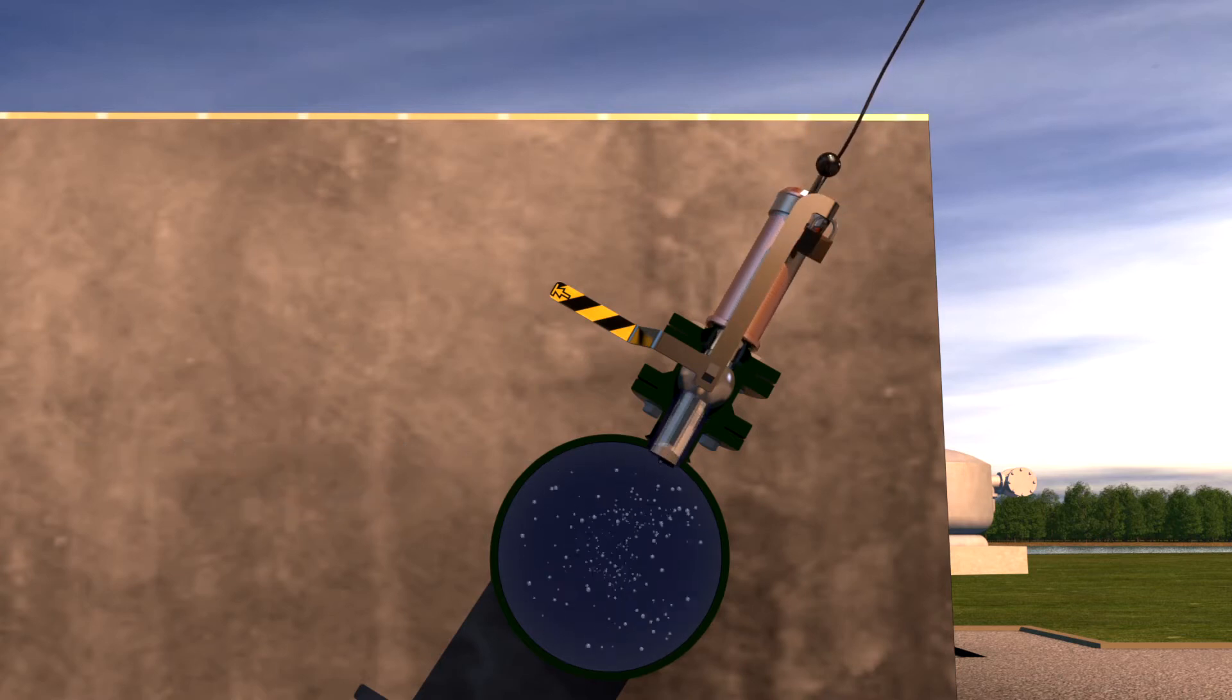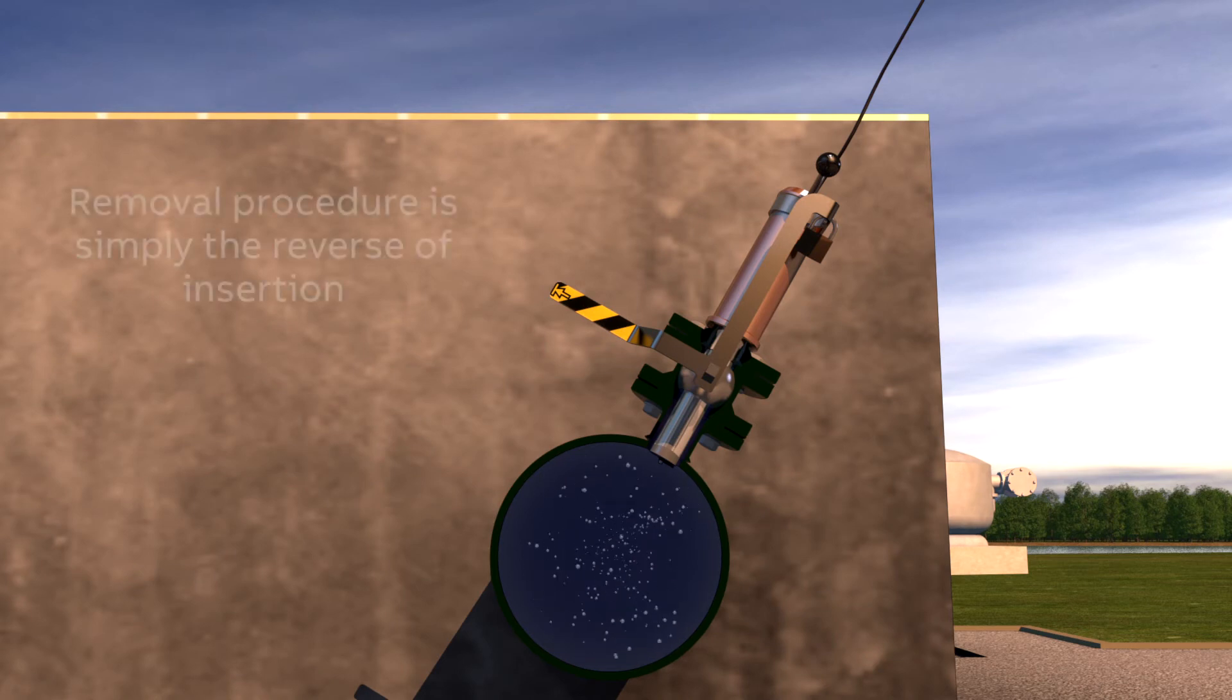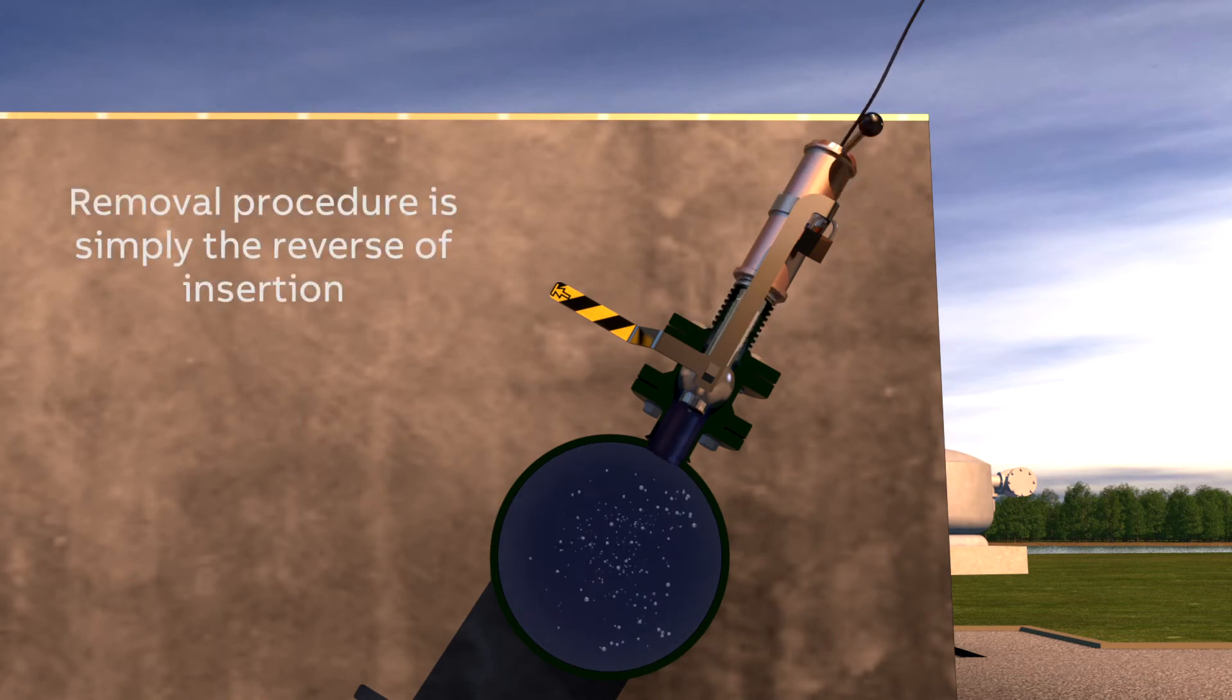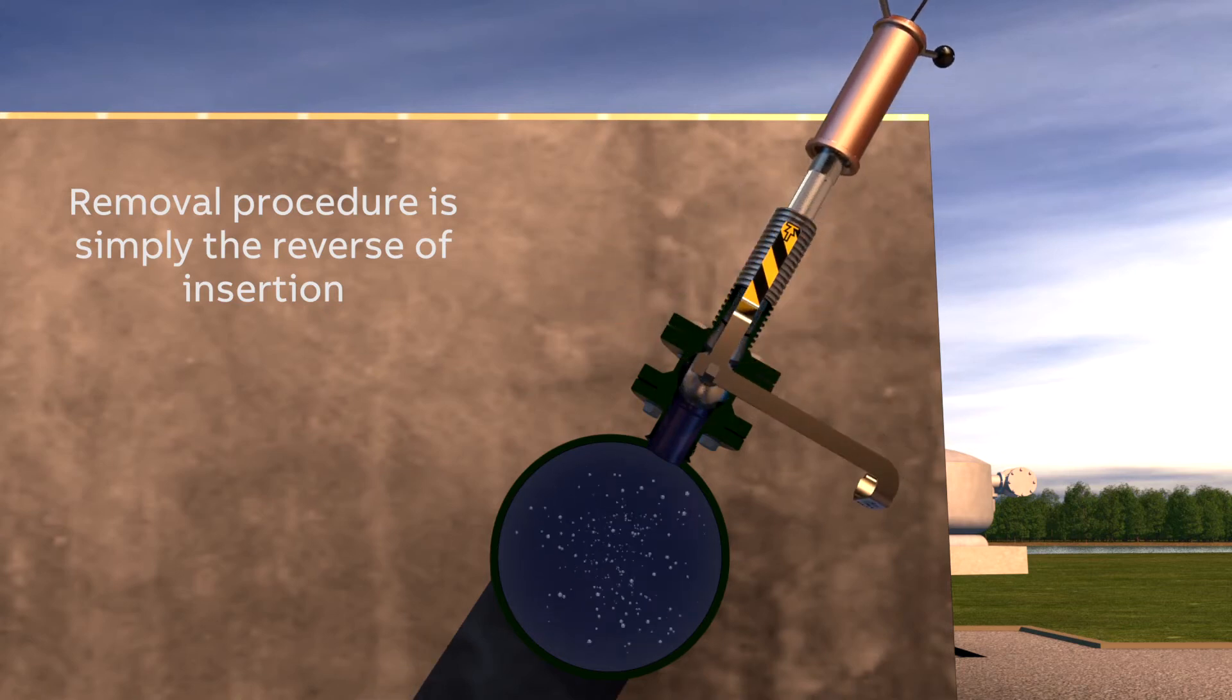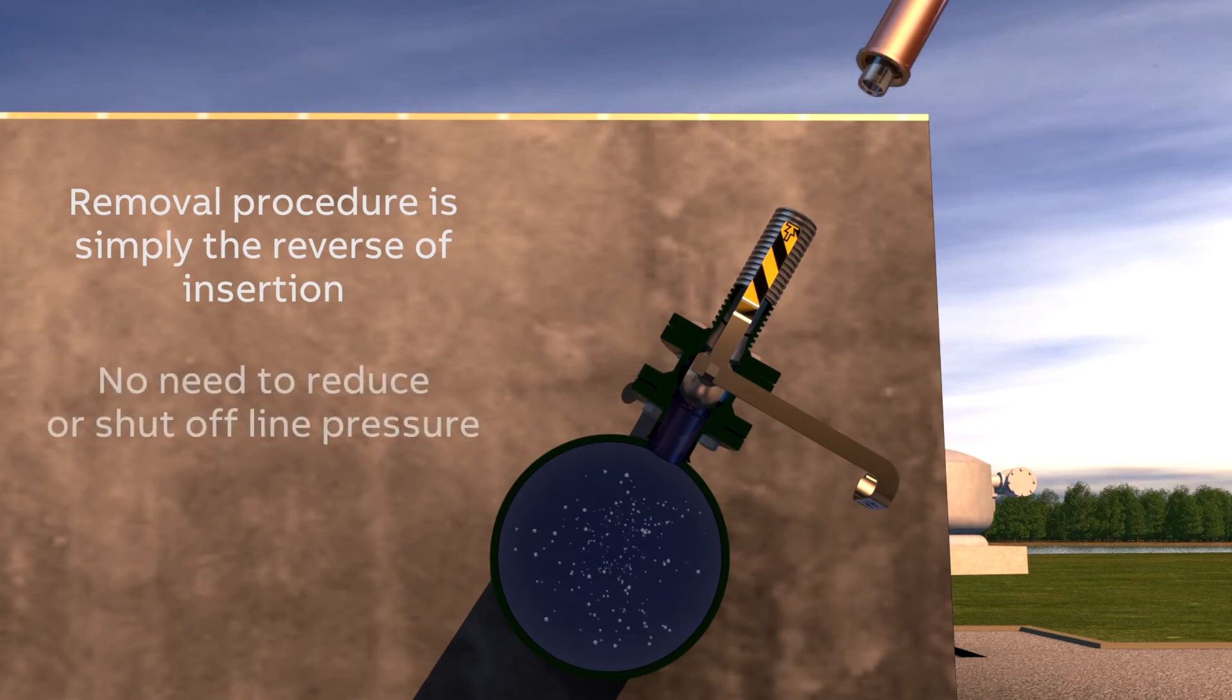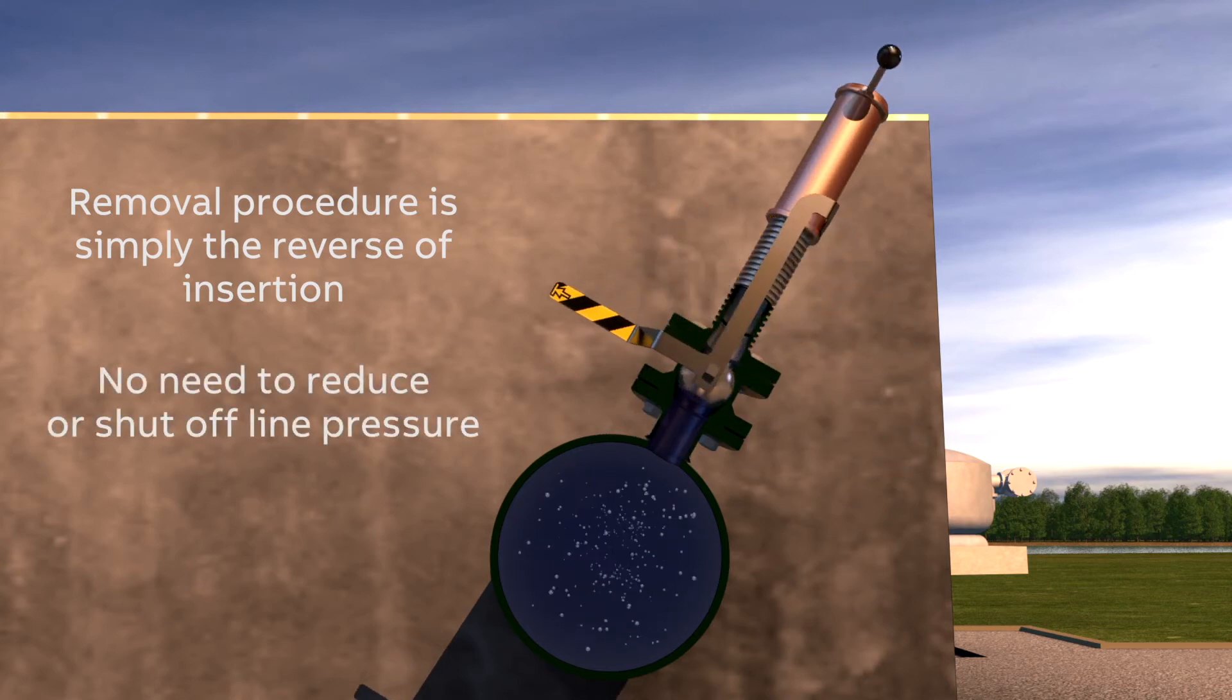Removing the sensor from the line is equally straightforward. By turning the capstan handle in the opposite direction and closing the ball valve, the sensor can be withdrawn even while the line is under pressure, with no need to reduce or shut off the line pressure.